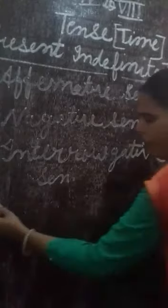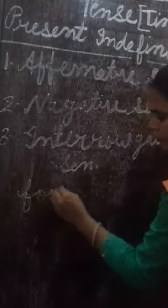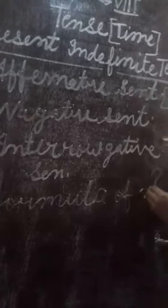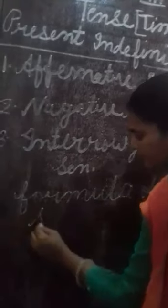Formula to make sentence: first subject, plus verb, first form of verb, plus s or es.